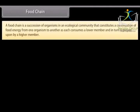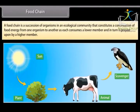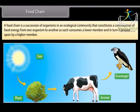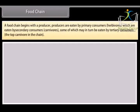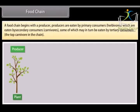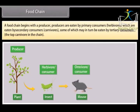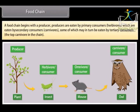A food chain is a succession of organisms in an ecological community that constitutes a transfer of food energy from one organism to another, as each consumes a lower member and in turn is preyed upon by a higher member. A food chain begins with a producer. Producers are eaten by primary consumers (herbivores), which are eaten by secondary consumers (carnivores), some of which may be eaten by tertiary consumers — the top carnivore in the chain.